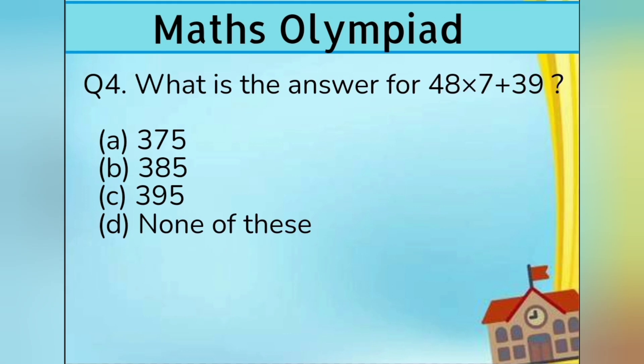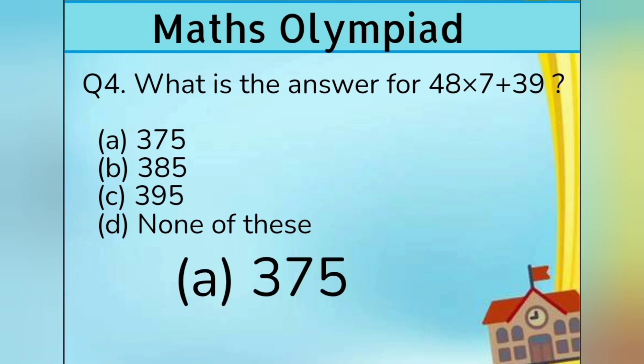Question number 4. What is the answer for 48 multiply 7 plus 39? Option A 375, Option B 385, Option C 395, and Option D none of these. Answer is Option A 375.